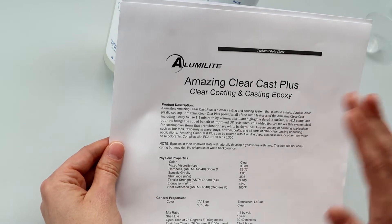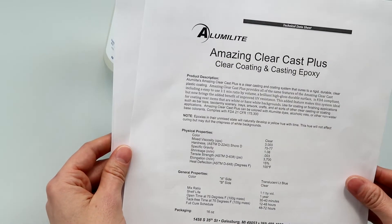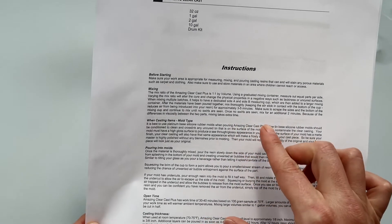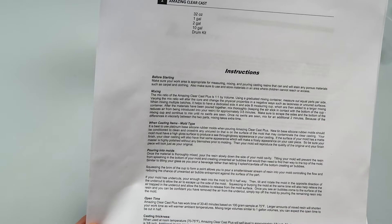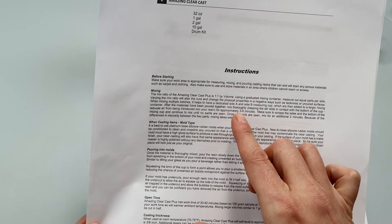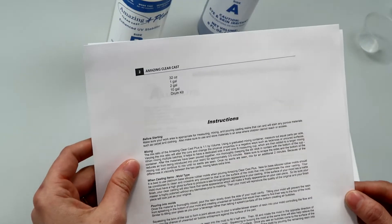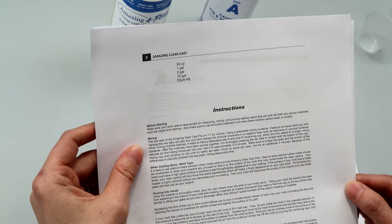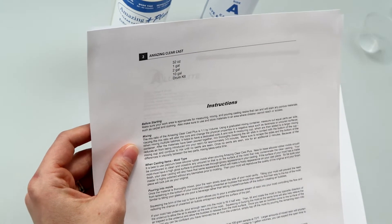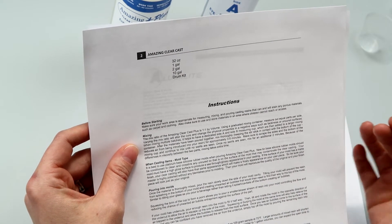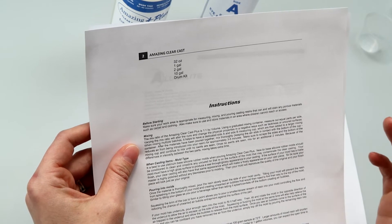This is just kind of giving you the rundown of the perks of the product. I'm going to leave the link for all of this in the description area below. So mixing, it's one to one by volume. Using a mixing container, measure out equal parts per side. Varying the mix ratio will alter the cure and change the physical properties in a negative way. Just measure precisely. Back when I was allowing comments some people would give me a hard time about measuring too precisely, which is absurd to me. If you're going to do this, take the extra few minutes to do it right. Measure precisely, mix all the way through. I see no point in not doing that.